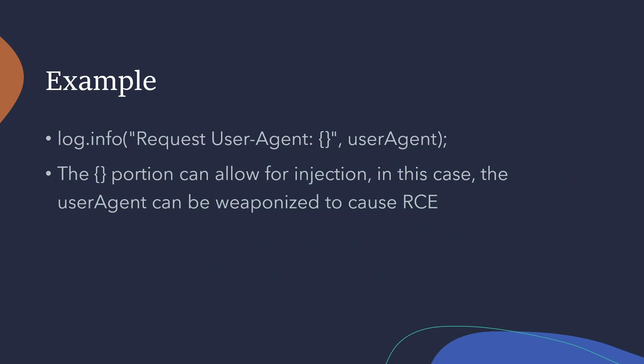To help understand this more, here's a brief example. The log.info call says 'request user agent' followed by parentheses — that parentheses portion is how the parameter gets placed into the log message, so the parameter gets replaced with the user agent variable. If you're familiar with HTTP requests, when you send a request to a server there's a user agent variable in the header telling it what user agent is trying to access the page. You can customize the user agent to be whatever you want, so you can put in a malicious payload as the user agent. When that user agent gets replaced in those parentheses, it acts as this JNDI lookup.